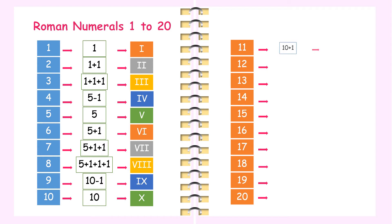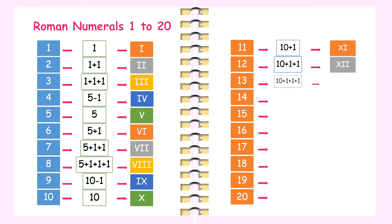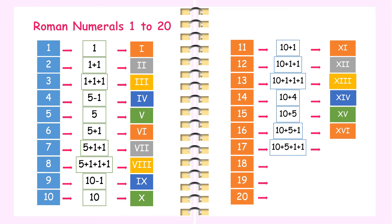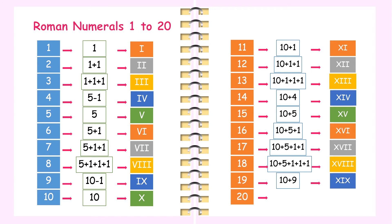11 is written as 10 plus 1, that is XI. 12 is written as 10 plus 1 plus 1, that is XII. 13 is written as 10 plus 1 plus 1 plus 1, that is XIII. 14 is written as 10 plus 4, that is XIV. 15 is written as 10 plus 5, that is XV. 16 is XVI, 17 is XVII, 18 is XVIII, 19 is 10 plus 9, that is XIX, and 20 is written as XX.